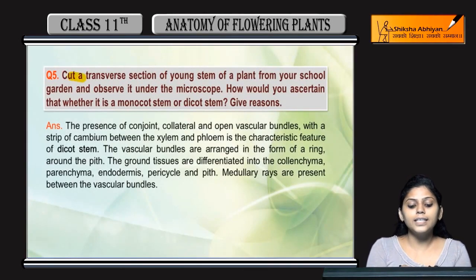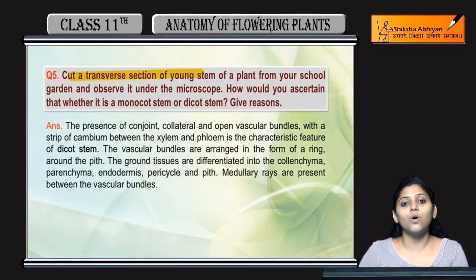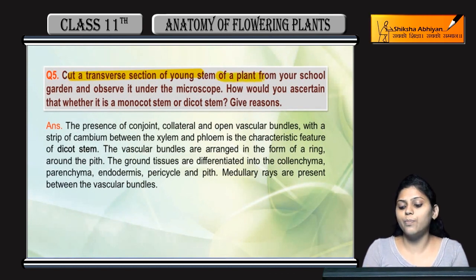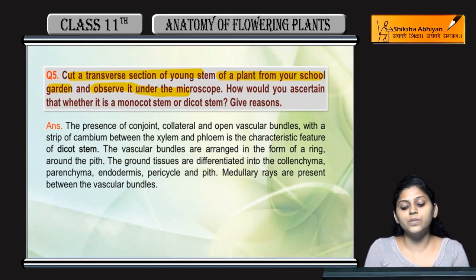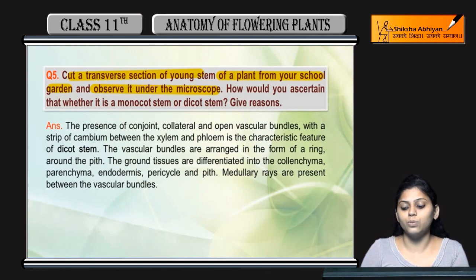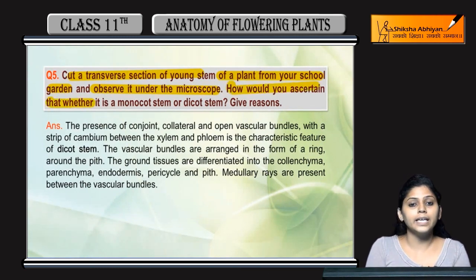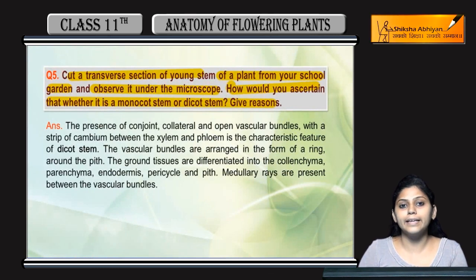Q5: Cut a transverse section of a young stem of a plant from your school garden and observe it under the microscope. How would you ascertain whether it is a monocot or dicot stem? Give reasons.